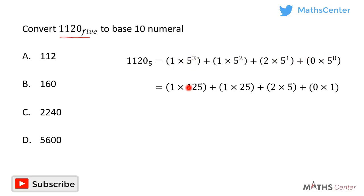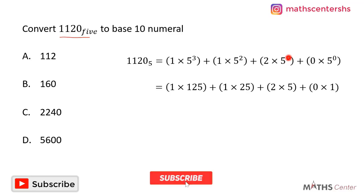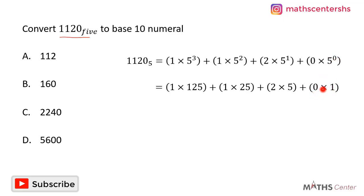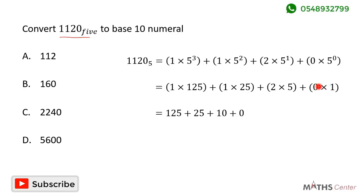5³ equals 125, 5² equals 25, 5¹ equals 5, and 5⁰ equals 1. So we have 1 times 125, plus 1 times 25, plus 2 times 5, plus 0 times 1. That gives us 125 plus 25 plus 10 plus 0, which equals 160.